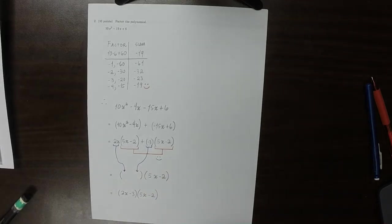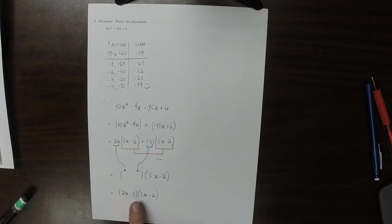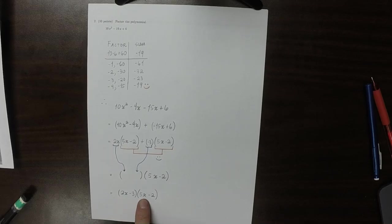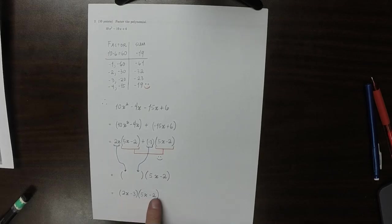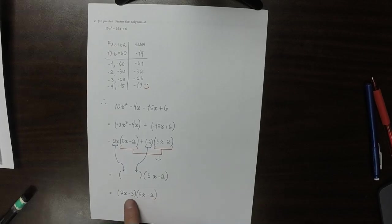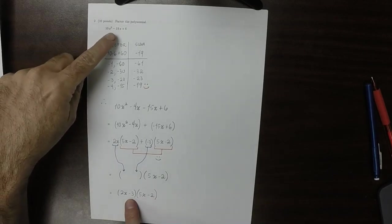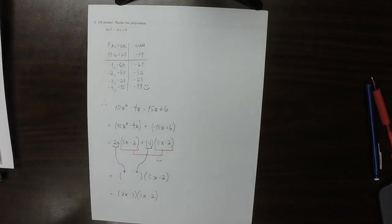So I'll foil that real quick in my head. So 10x squared, good. And then minus 4x minus 15x, so that's minus 19x, and then plus 6. Looks good.